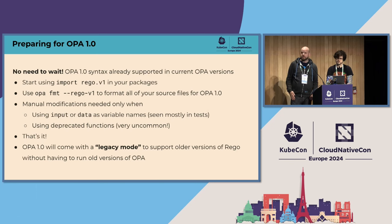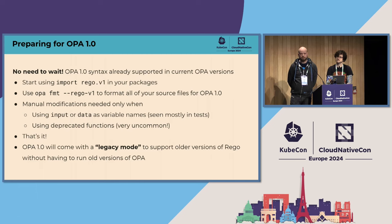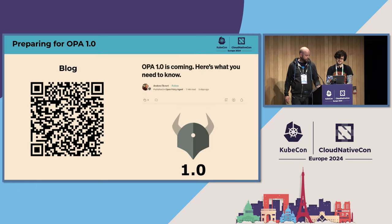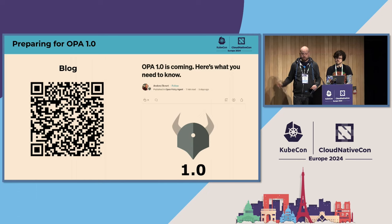We will also provide a legacy mode if you need to run mixed deployments of modern and older Rego — you'll just be able to indicate that a policy is an older version and can't be updated right now. There's a blog post if you're interested to learn more about what OPA 1.0 entails — go check it out.